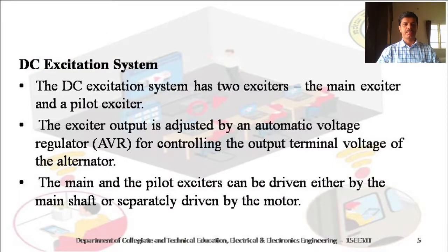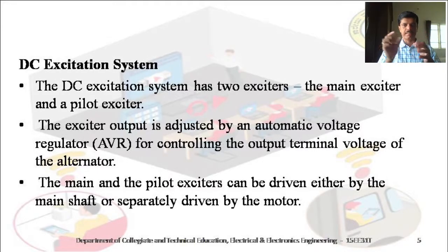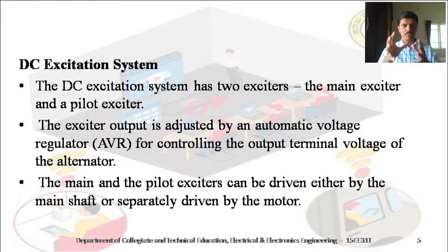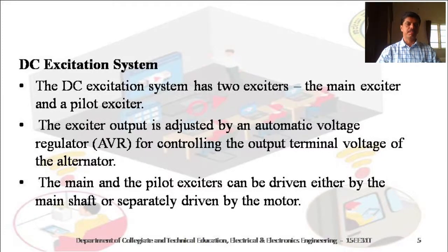In the DC excitation system, there are two exciters: one is the main exciter and another one is the pilot exciter. The pilot exciter is a small DC generator usually mounted on the shaft of the alternator itself. The output of the exciter is constant, but if the exciter output voltage changes, we use an automatic voltage regulator to control the output terminal voltage and maintain a constant voltage for the field winding.